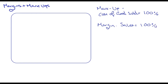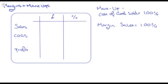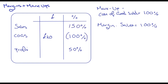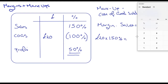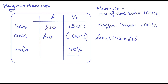Let's draw out this little table. In a markup question, say we want to make 50% profit and it costs us £20 to make this unit. Cost of goods sold is 100% because we're looking at markup, so sales must equal 150%. If cost of goods sold is £20, we times that by 150%, which gives us £30. So sales has to be £30 to make a profit of £10. Profit is 50% of cost of goods sold.